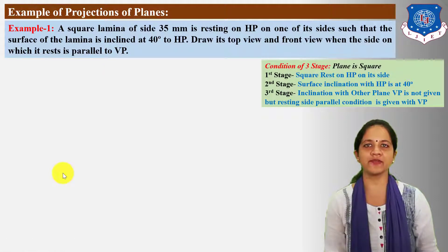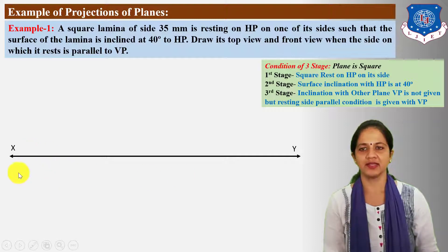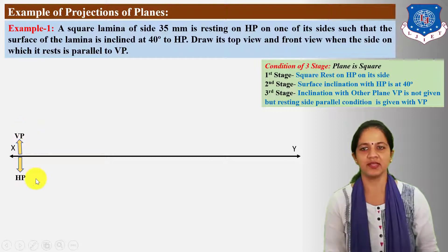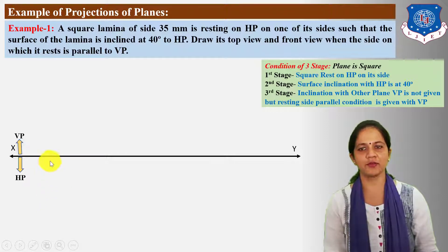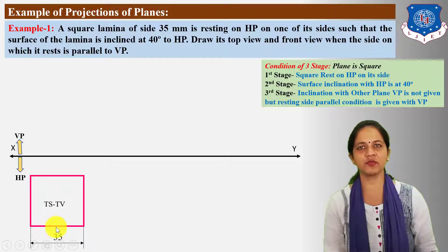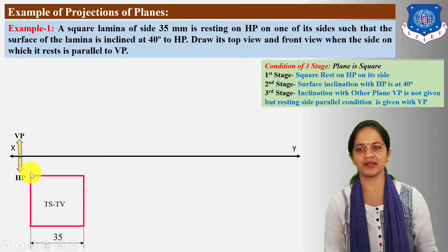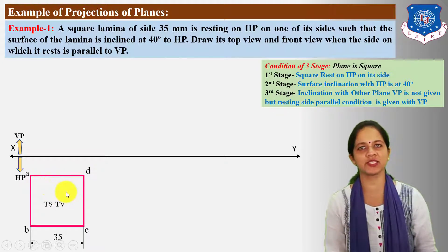First, let us draw the top view and front view of the first stage with reference to XY. Assume the horizontal plane below the XY line and the vertical plane above it, since the plane rests on HP. The true shape of the square lamina is visible in the top view, so draw the first top view below the XY line. Keep one side of the square on the left-hand side. The side length is 35 mm.